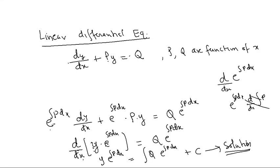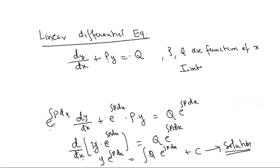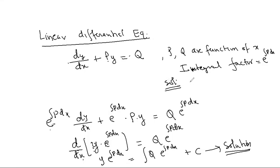Now, one small change — e raised to integral p dx looks awkward, so I am going to call it the integrating factor. Why? Because by multiplying with e raised to integral p dx, I am able to integrate it. Sometimes in the exam they ask for just the integrating factor, which is e raised to integral p dx. So the solution is: y × (integrating factor) = ∫q × (integrating factor) dx + c.